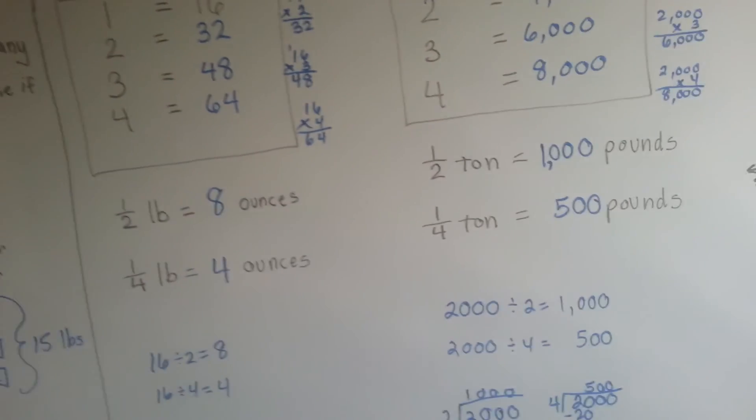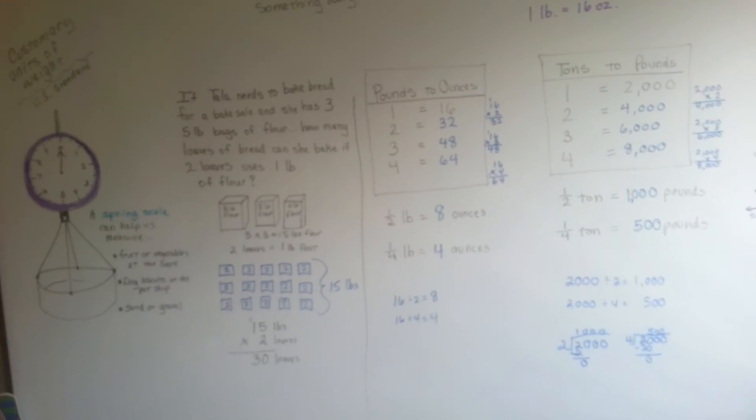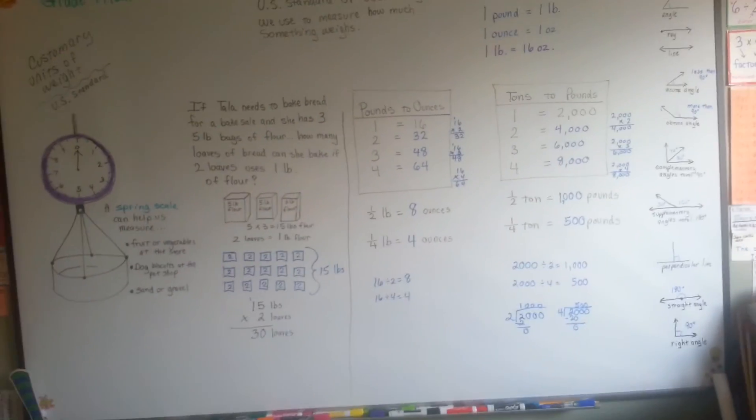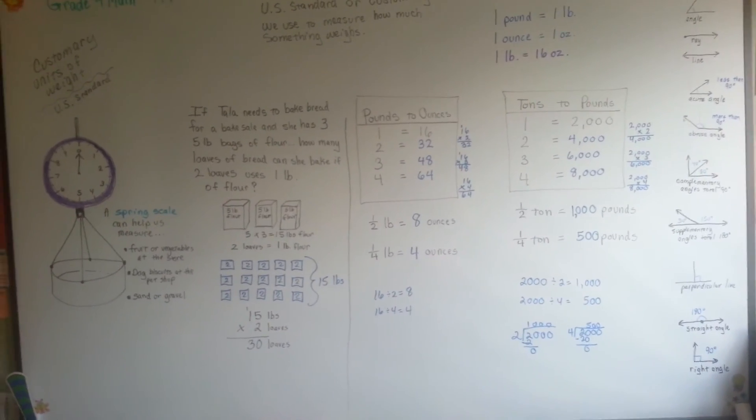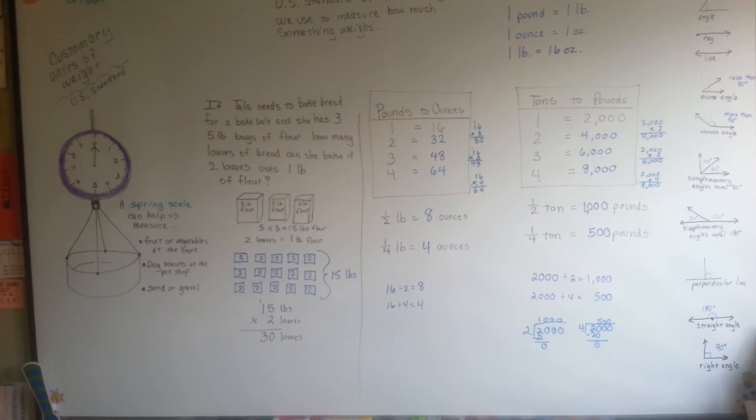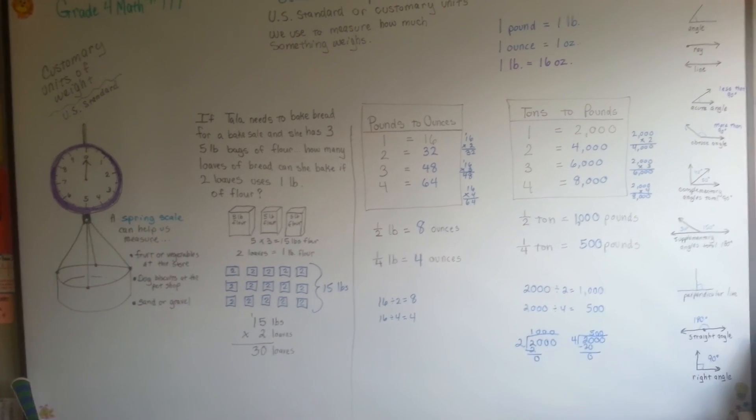So these are our customary units of weight, the U.S. standard weights: ounces, pounds, tons. We can convert them back and forth to change measurements and to use them. And now you know that one pound is sixteen ounces and that one ton is two thousand pounds. See you next video.